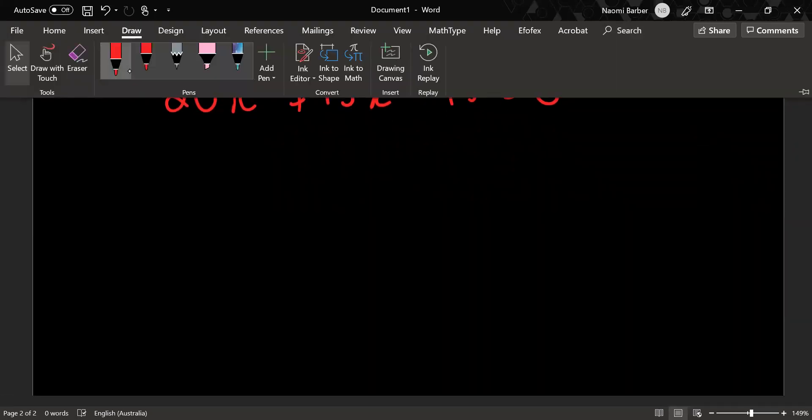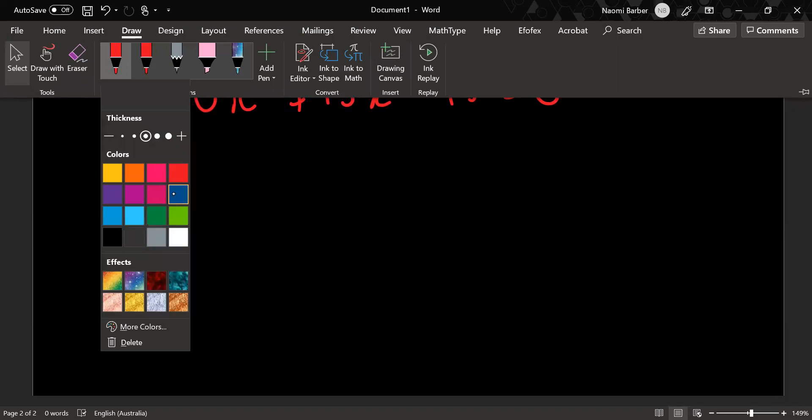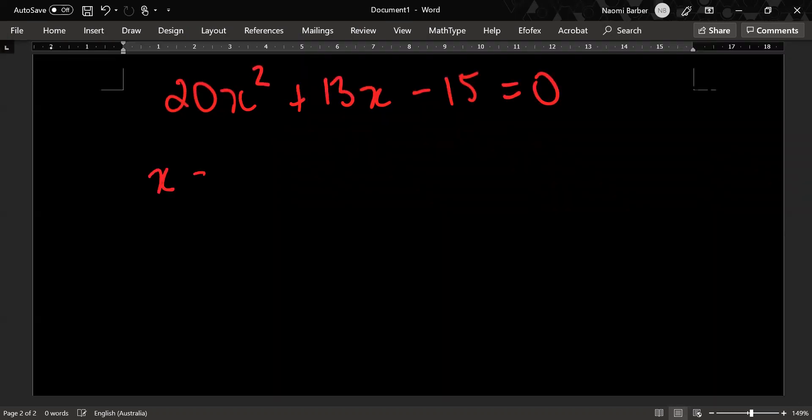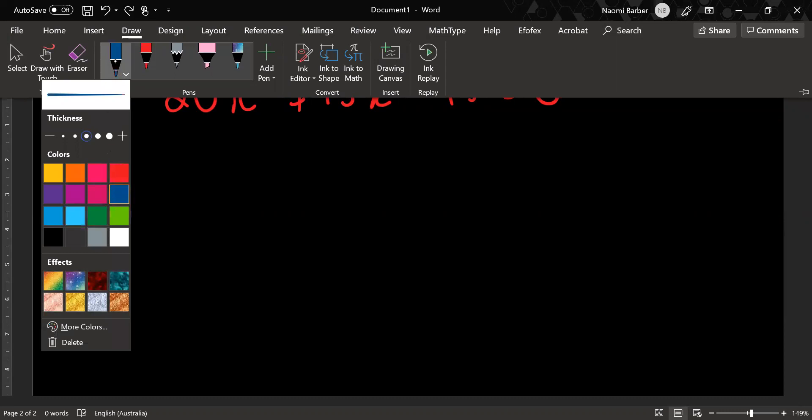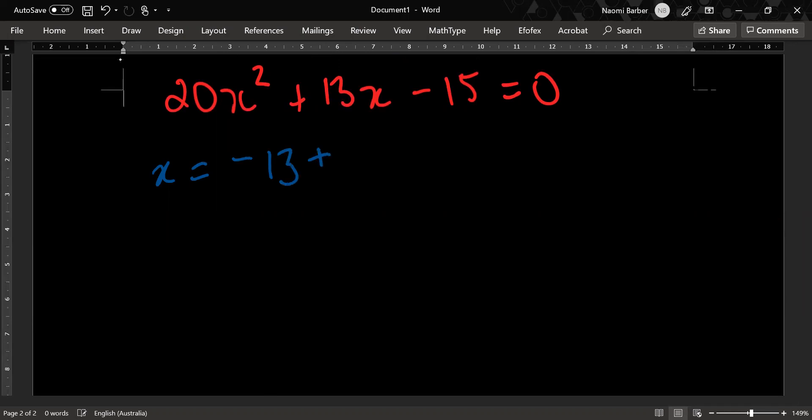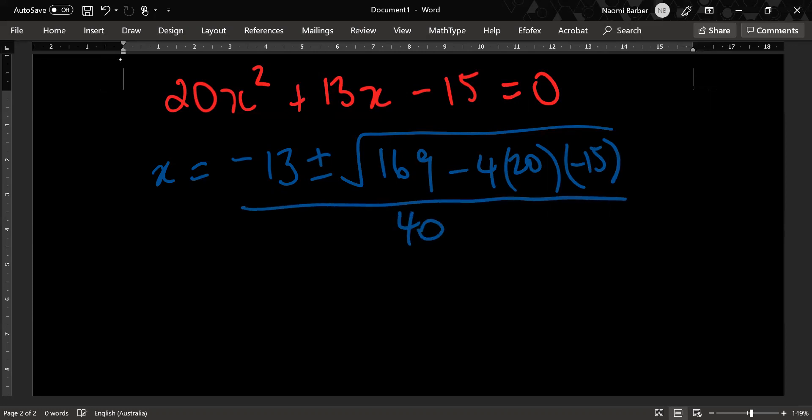Then we require the quadratic formula, which requires another colour of pen. x equals negative 13 plus or minus the square root of 169 (b squared) minus 4 times 20 times minus 15, all over 40. Hopefully I got that right because that would be really embarrassing if I did not. Calculation: 169 plus, because there are two minuses you can go straight to plus, so 4 times 20 times 15 equals minus 13 plus or minus the square root of 1369 over 40.